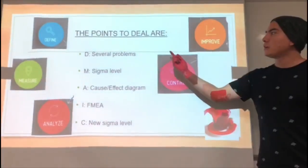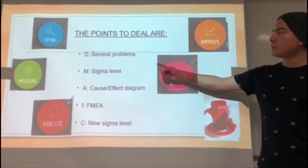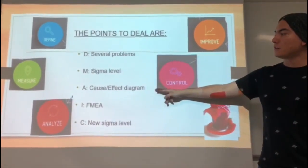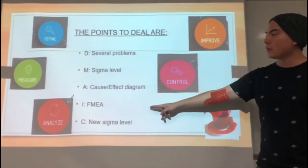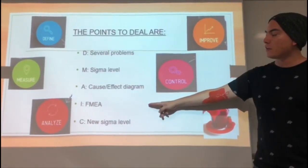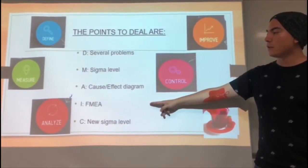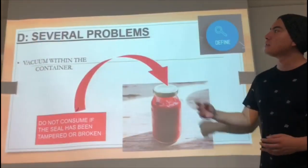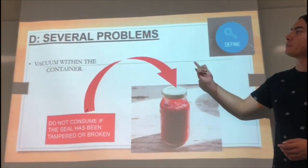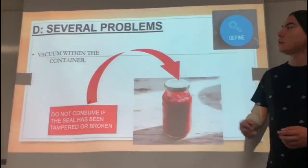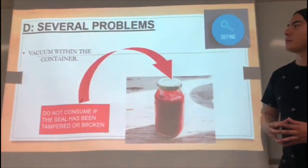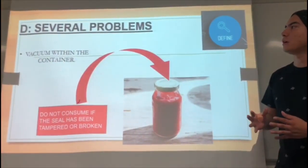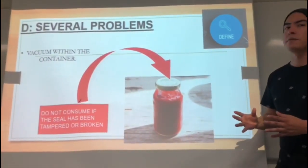The points deal with several problems: sigma level, cause and effect diagram, FMEA, and new sigma level. The problem with the strawberry jam is that the product does not have a vacuum seal.